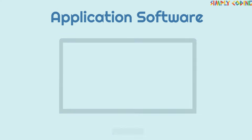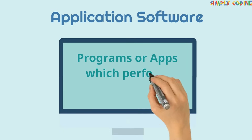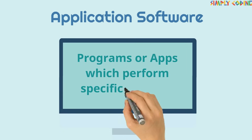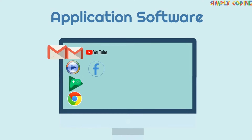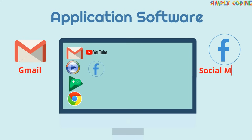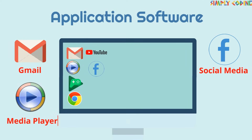Application software are programs or apps which perform some specific function. For example, we use Gmail for emails, Facebook for social media, Windows Media Player for music and videos, and similarly many other apps are available for your use or download on your computer.